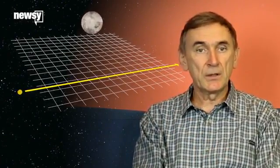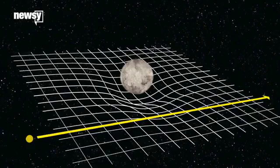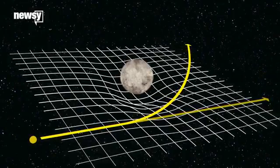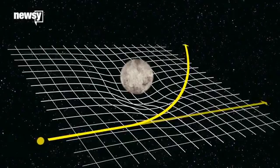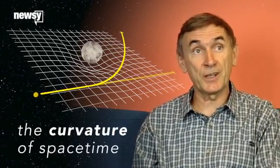Light follows what space does, so if space curves, then light is going to curve. When you take a particle which has mass and put it in spacetime, the particle actually distorts the geometry of spacetime, which becomes not flat but curved. This is the curvature of spacetime.